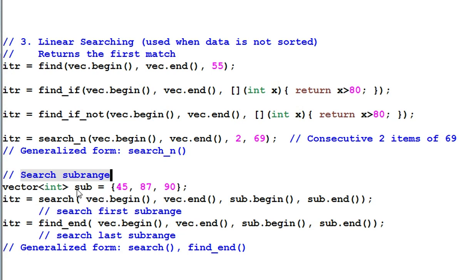Search subrange. First, I define a subrange data pattern. Then I use the function search to find the first subrange that matches this pattern. I can use find end to find the last subrange that matches this pattern. And they both have a generalized form of the same name, search and find end. It's kind of weird that these two functions complement each other but they have very different names.